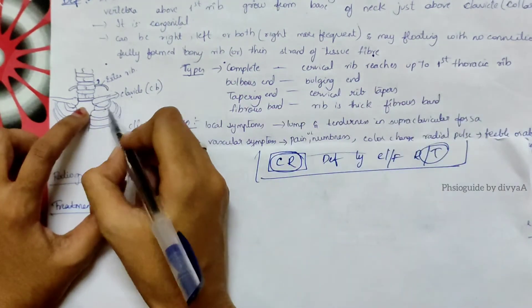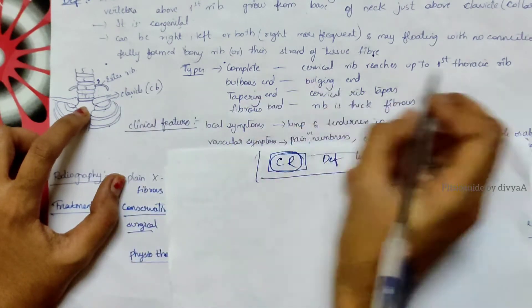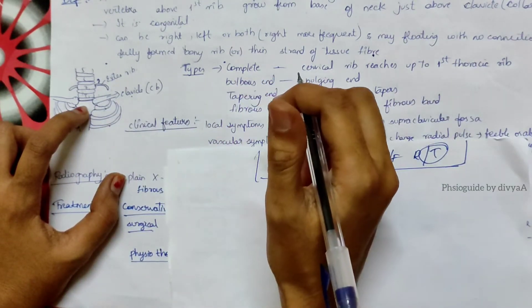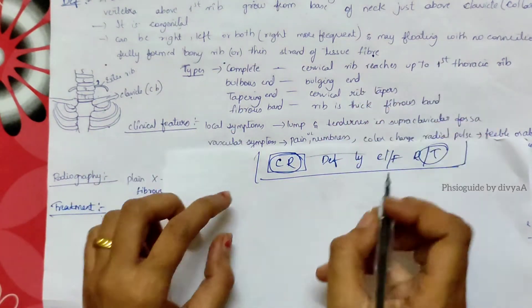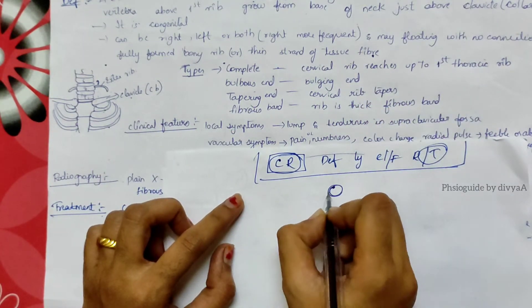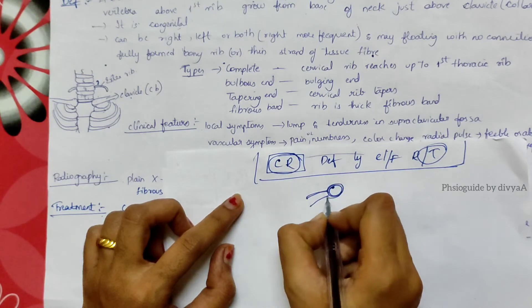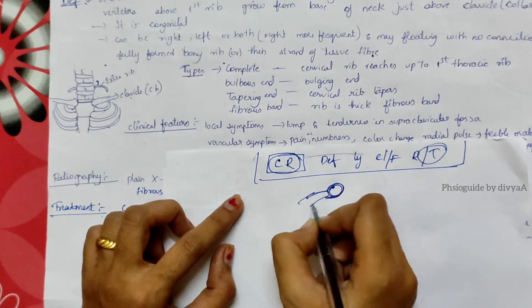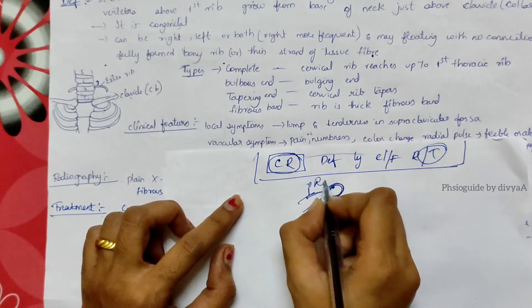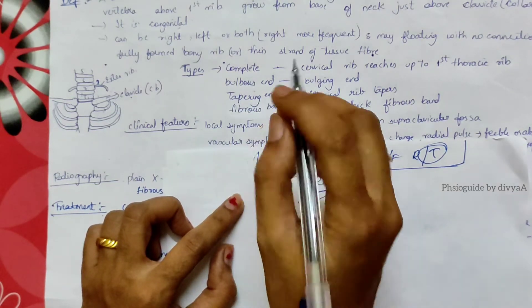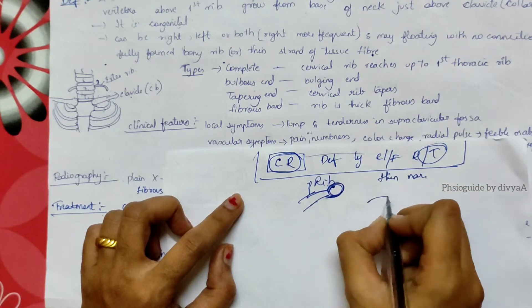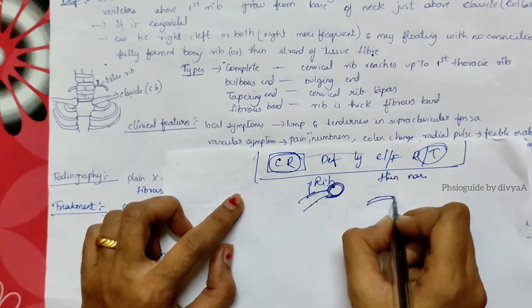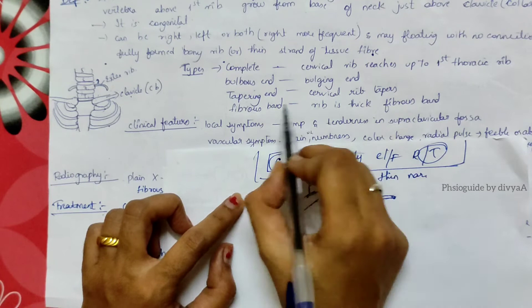Bulbous end is a bulging end, fat or round end. Tapering end means thin or narrow. This extra cervical rib may be thin or narrow, so the cervical rib tapers.